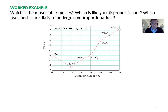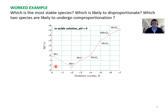Let's work through a typical exam-style example using manganese, which is a great case because it has so many oxidation states. Mn⁰ appears at (0, 0) as expected. The most stable species on the diagram is Mn²⁺, as it sits at the lowest point — essentially a potential well. This means Mn⁰ and Mn³⁺ coexisting will comproportionate to form Mn²⁺.